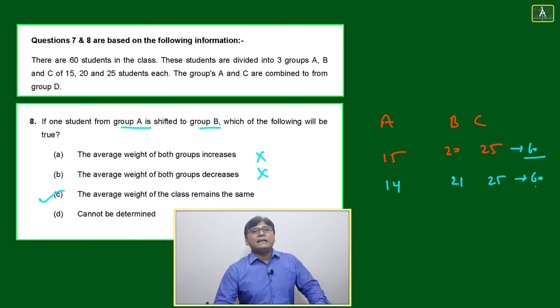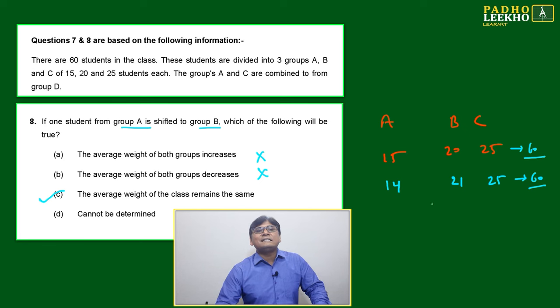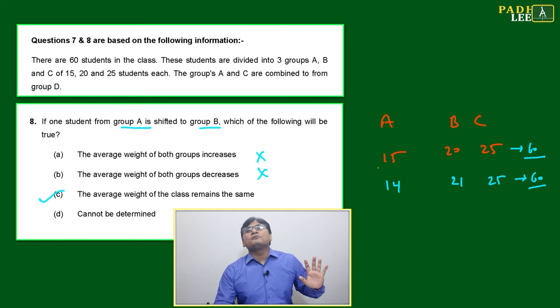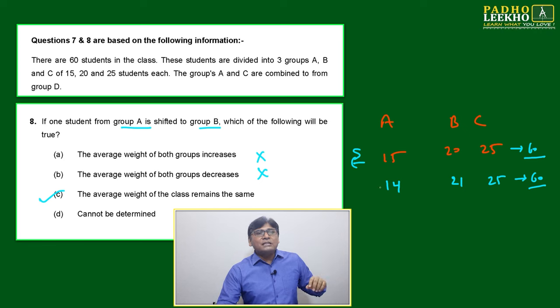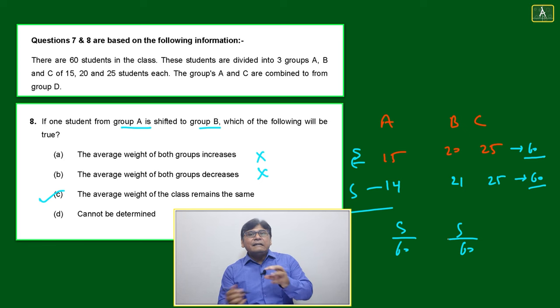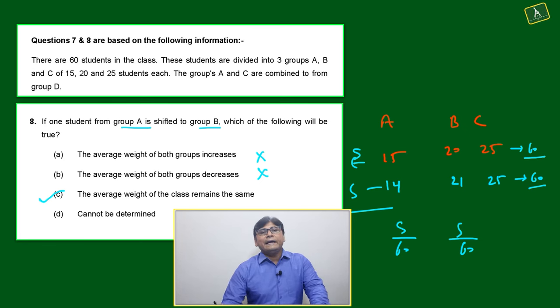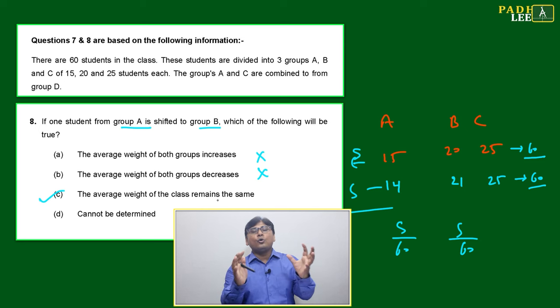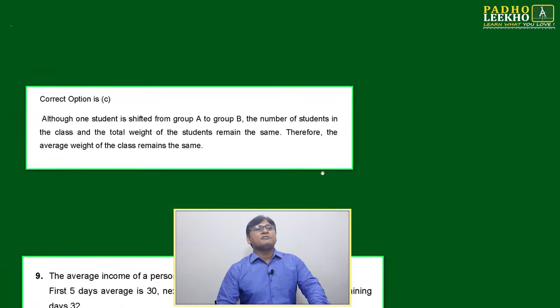But option C is given and correct. Earlier the number of students was 60, and after shifting from group A to B, the total number of students is still 60. The total sum here is also the same, so S divided by 60 will not change. This internal migration of students from group A to B will not affect the whole group average, meaning the average weight of the class remains the same.